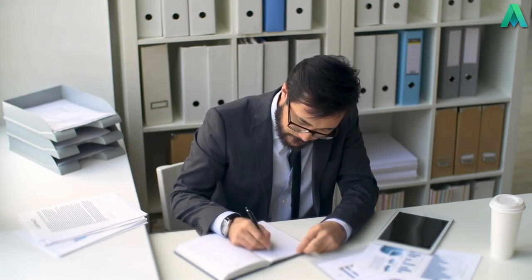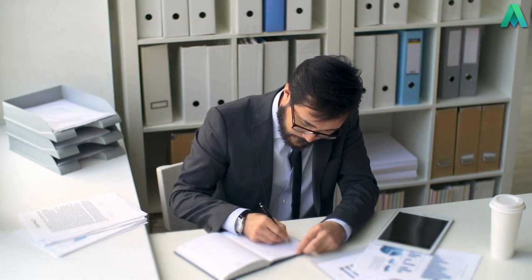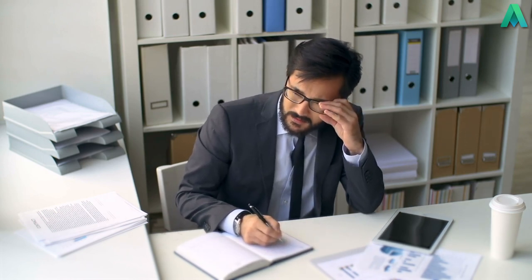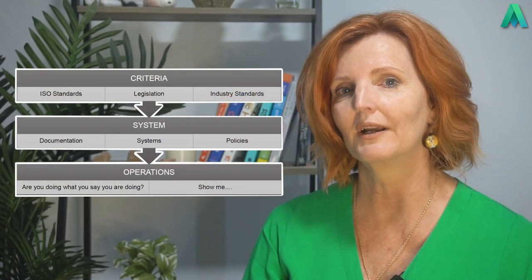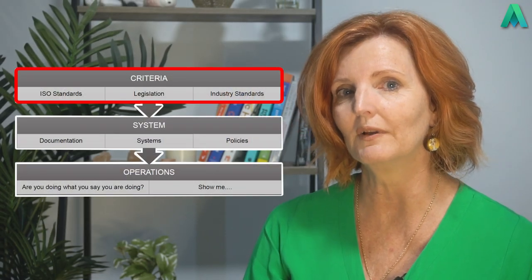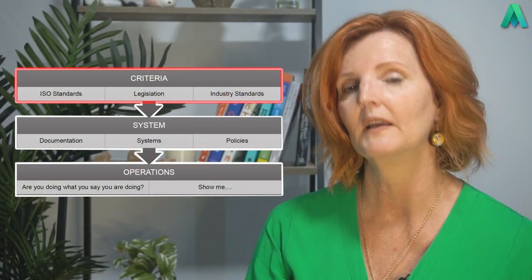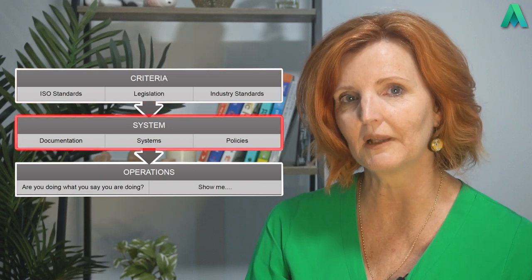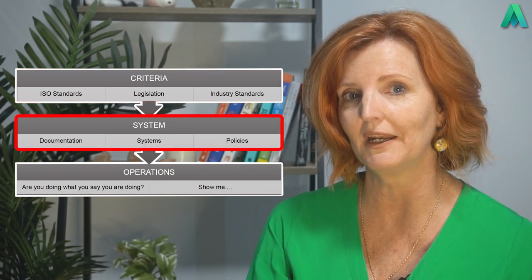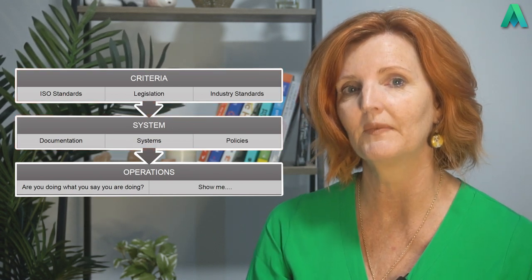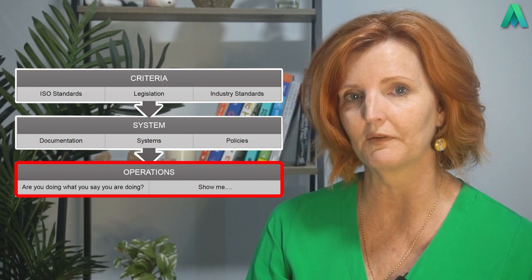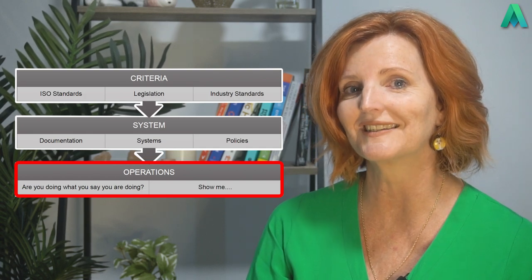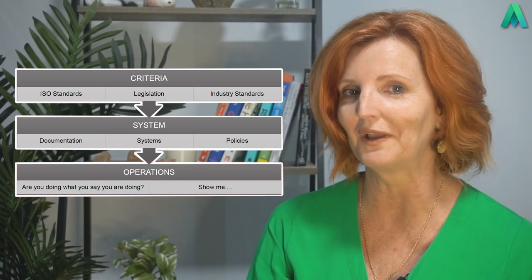Your planned audits should ensure that there are two criteria areas that you audit against, and will look something like this. The criteria level is ISO 9001. The system level is your own quality management system and the operations level is where you can see it all in action.